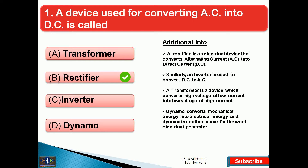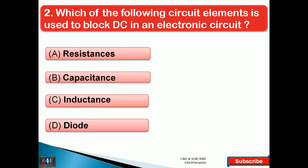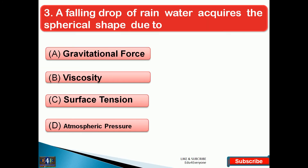Dynamo converts mechanical energy into electrical energy; dynamo is another name for electrical generator. Next question: which of the following circuit elements is used to block DC in an electronic circuit? The right answer is option B, that is capacitance. A falling drop of rain water acquires the spherical shape due to — the right answer is option C, that is surface tension.